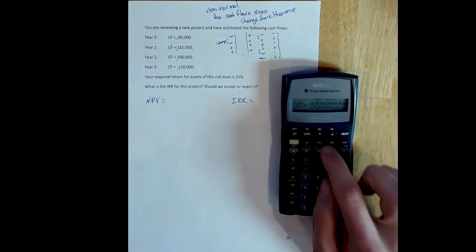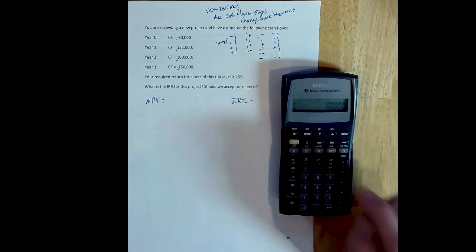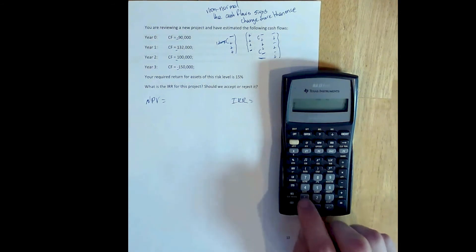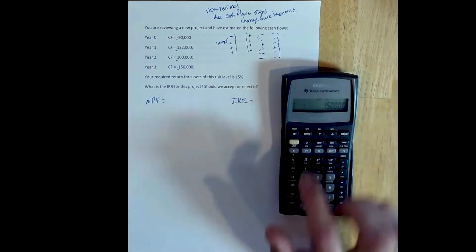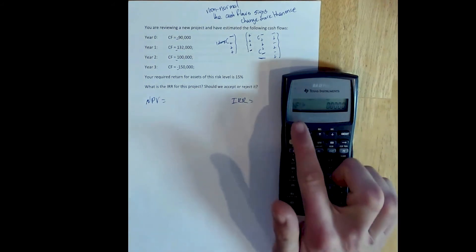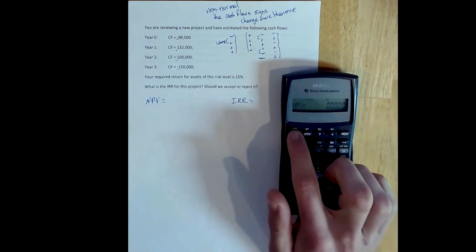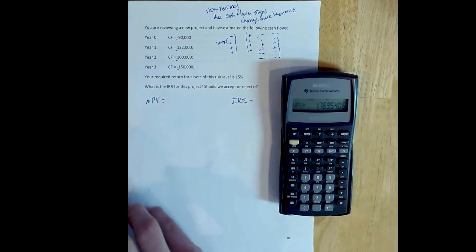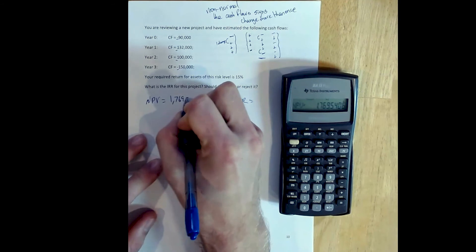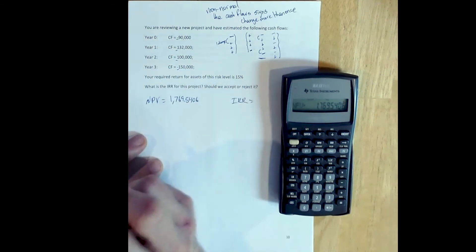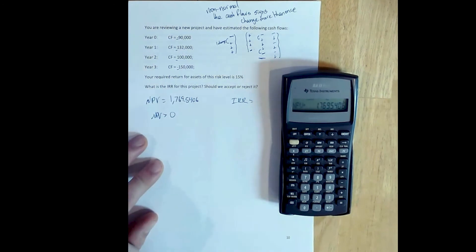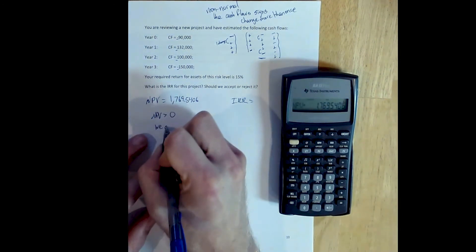We want to solve for the net present value of this project, so we get NPV. The required return for projects of this risk level is 15%, so 15% is our discount rate. So that's our I. We move on with the down arrow, and we compute to solve for net present value. And we get $1,769.54. Based on our NPV rule, this is a net present value that's greater than zero, so we accept the project.